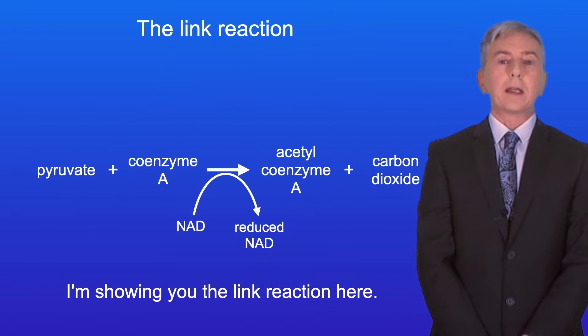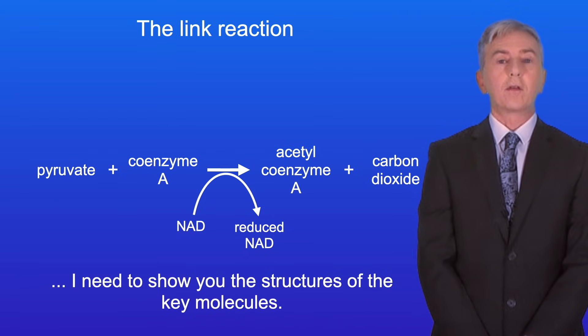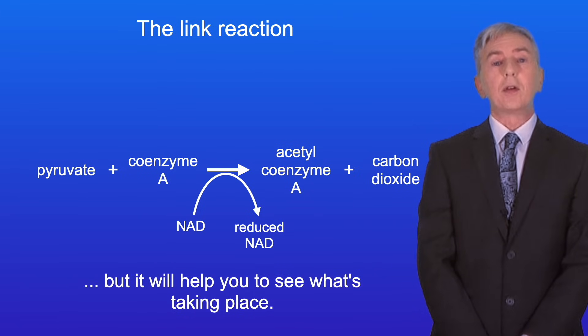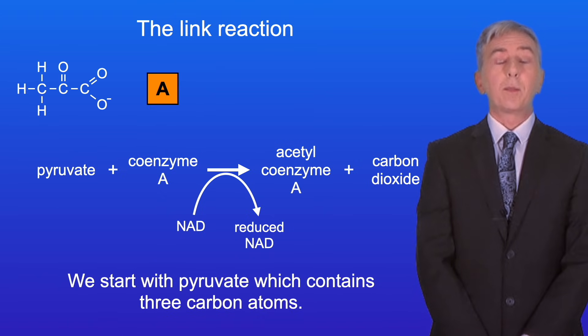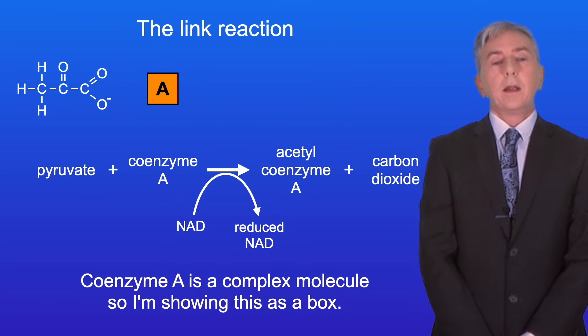I'm showing you the link reaction here. Now in order to understand this, I need to show you the structures of the key molecules. You don't need to learn these, but it will help you to see what's taking place. Okay, so we start with pyruvate, which contains three carbon atoms. The pyruvate now reacts with a molecule called coenzyme A. Now coenzyme A is a complex molecule, so I'm showing this as a box.